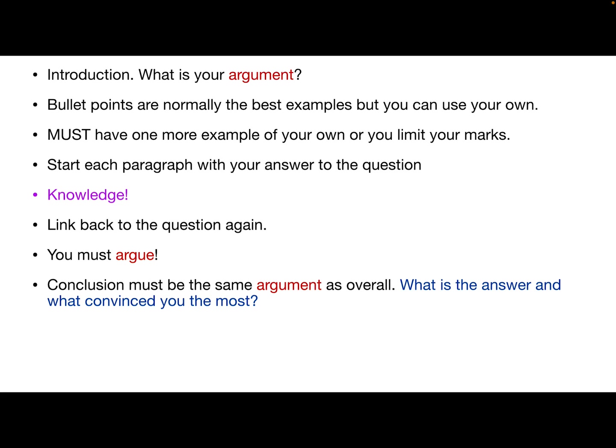So bullet points again are normally the best, but you can use your own. So you must have one example of your own or you're going to limit those marks. So you can't just include the CID and the radios. You need others. Start each paragraph with your answer to the question. So yes, it was the most significant development. And why? So use that knowledge then to back up that. So what was it about CID that meant that specialisation was really important? You could bring in the dog squads, the bomb squads, etc. You know, it's giving, it's making the police effective. They can focus in on one area. They can really target the criminals in those areas. And, you know, as time goes on, it means they can broaden out and look at things like cybercrime and those kinds of things and be real specialists in that area. And you're more likely to catch the criminals. Link that back to the question again. Like I said, like more likely to catch the criminals, more likely to be effective. You must argue.